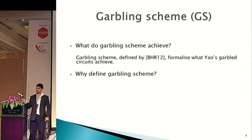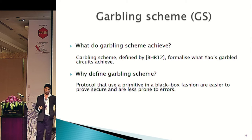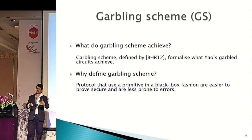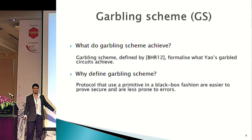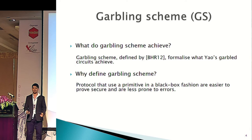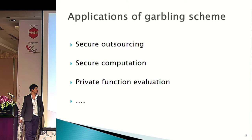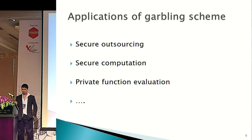Why did they define a gobbling scheme? There are two principal reasons. First, if you have a protocol that uses a primitive in a black box fashion, that protocol is more likely to be secure, because you don't have to care about the implementation details underneath. The other thing is you can easily say this implementation is better in this case, and choose between them without having to worry too much about security. There are many applications of gobbling schemes: secure outsourcing, secure computation, private function evaluation, KDM security, and it's very important.